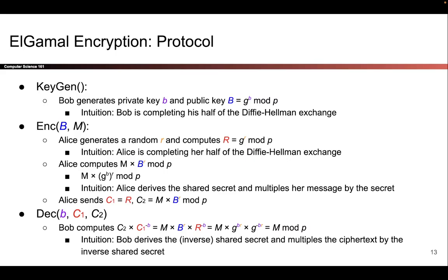So how does Bob get the inverse shared secret? Well, he knows big R — that's one of the values that Alice sent over as part of the ciphertext, that's Alice's half of the secret. But instead of raising that to the b power, which would give us g to the b r — that's the shared secret — Bob is actually going to take big R and raise it to the negative b power. By raising big R to the negative b power, we end up getting big R to the negative b, and that's equivalent to g to the negative b r. That is the inverse shared secret. So Bob has completed his half of the Diffie-Hellman exchange, but instead of using b, he used negative b to get the inverse shared secret.